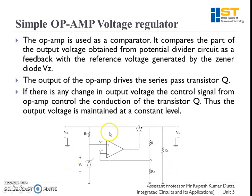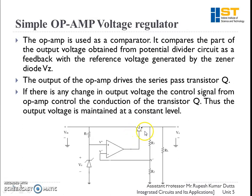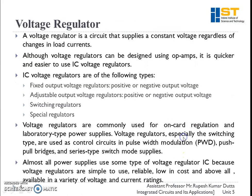This is the circuit of a simple op-amp voltage regulator in which we are using the op-amp as a comparator. We are comparing the voltage from the zener diode with the voltage fed back from the output. If this difference voltage at the input of the op-amp is positive, we get a positive voltage; if negative, we get a negative voltage. In the case of positive voltage, the transistor Q will be on with a drop of V_BE, and in the case of negative voltage, transistor Q will be off. So if there is a change in output voltage, the control signal from the op-amp controls the conduction of transistor Q, thus maintaining the output voltage at a constant level.